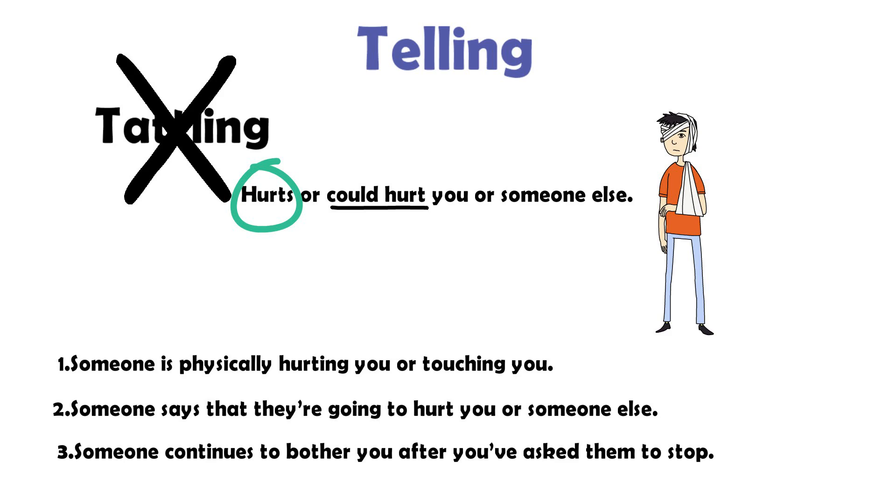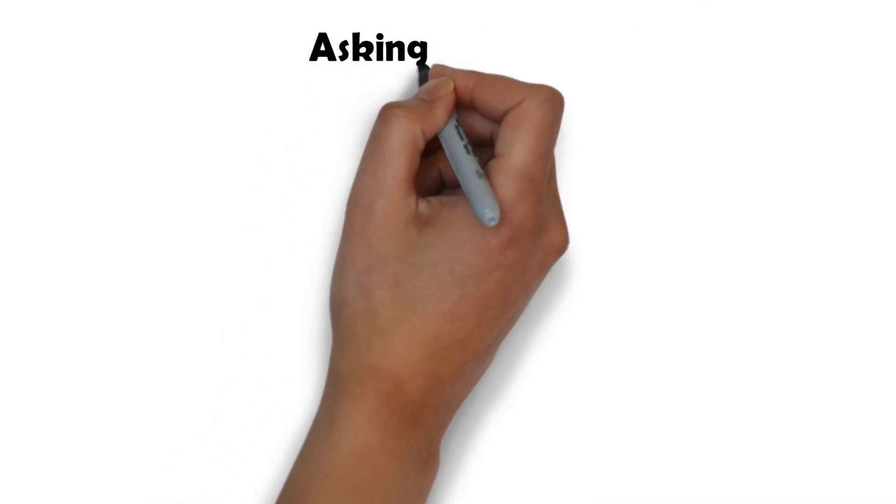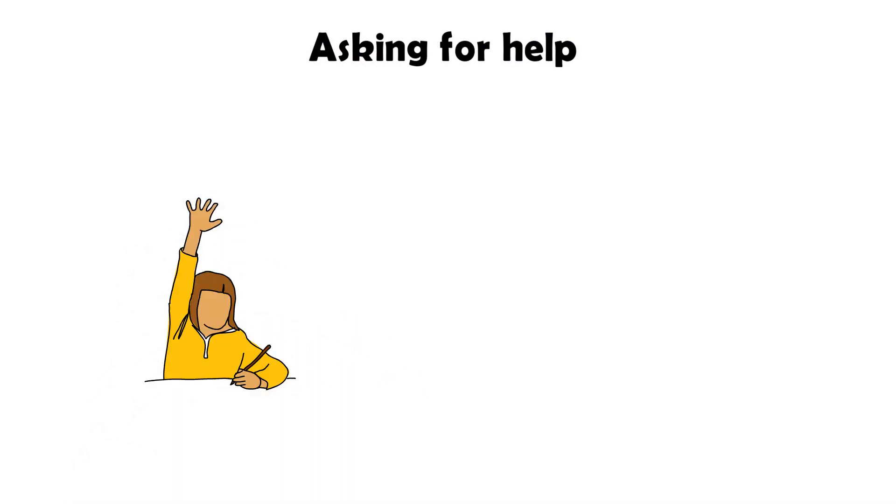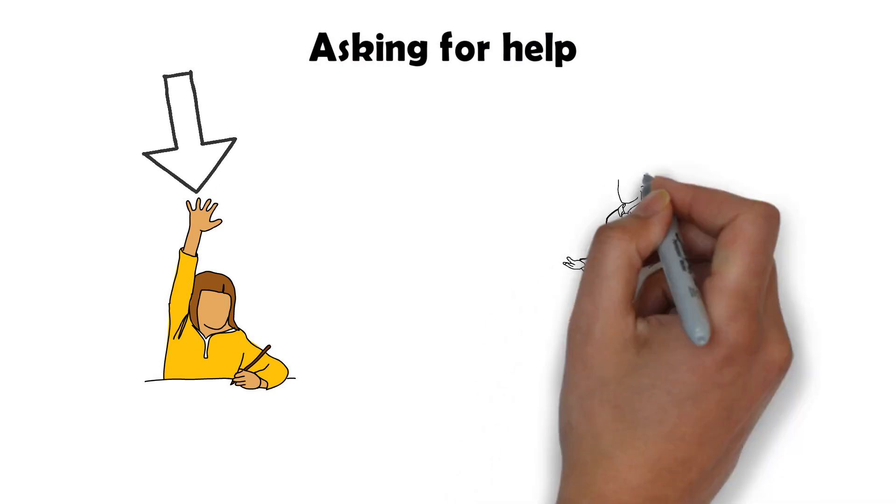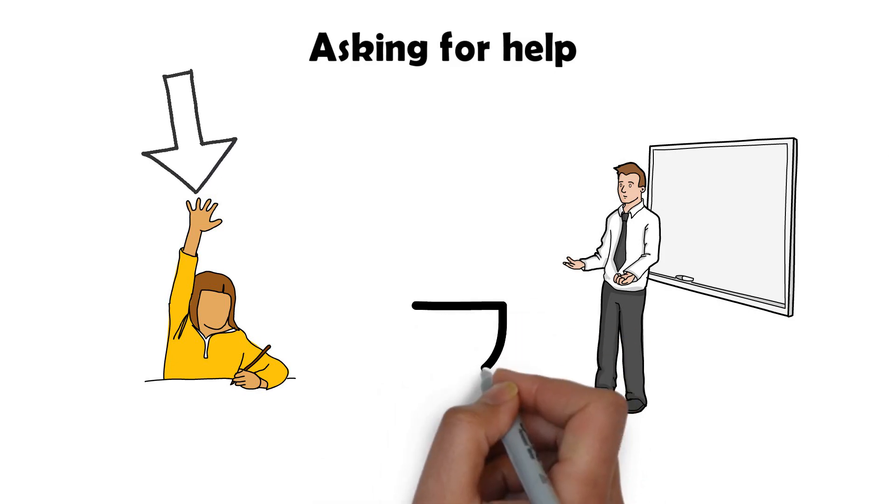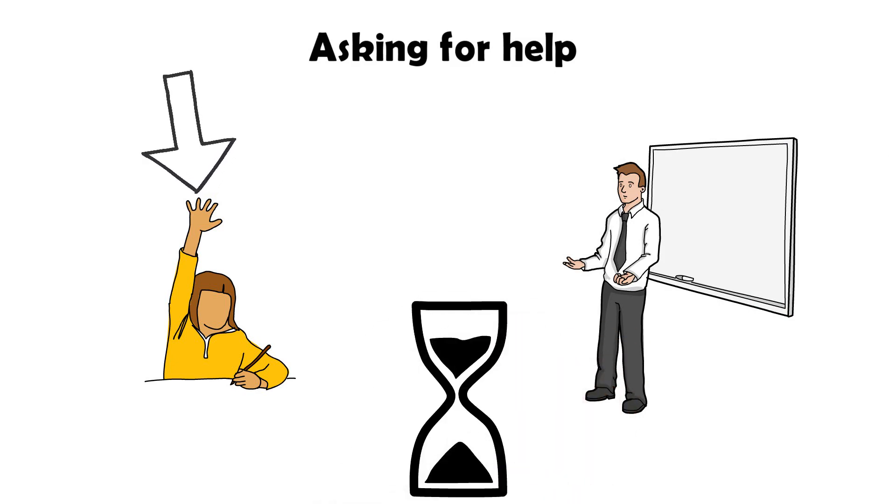Now that we've discussed the differences between tattling and telling, let's discuss how we can appropriately tell and ask adults for help when we need it. When something happens that we should tell an adult about in school, raising our hands is usually the first step we should take. When you raise your hand, remember there is usually only one teacher in a room full of students. It might be hard for your teacher to get to you right away, so it's important to be patient.